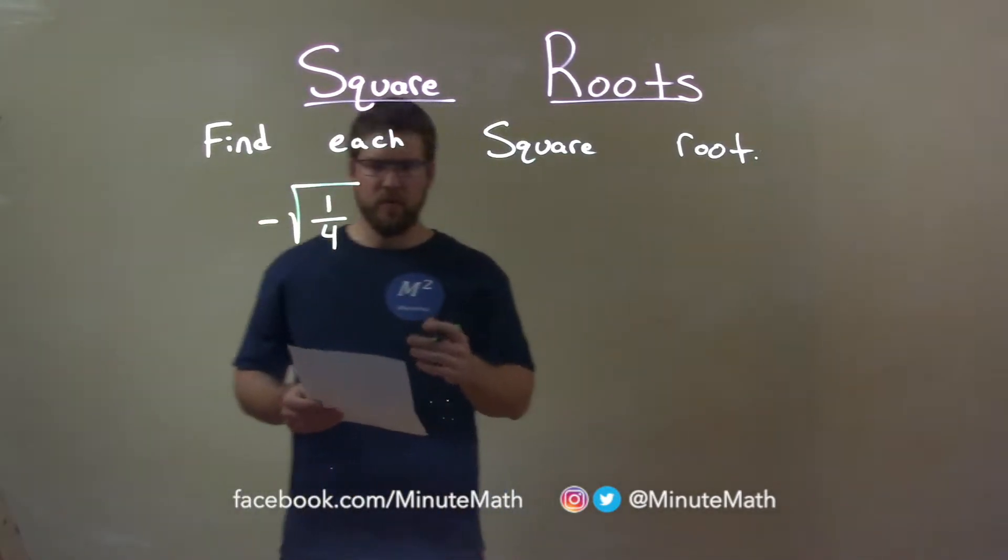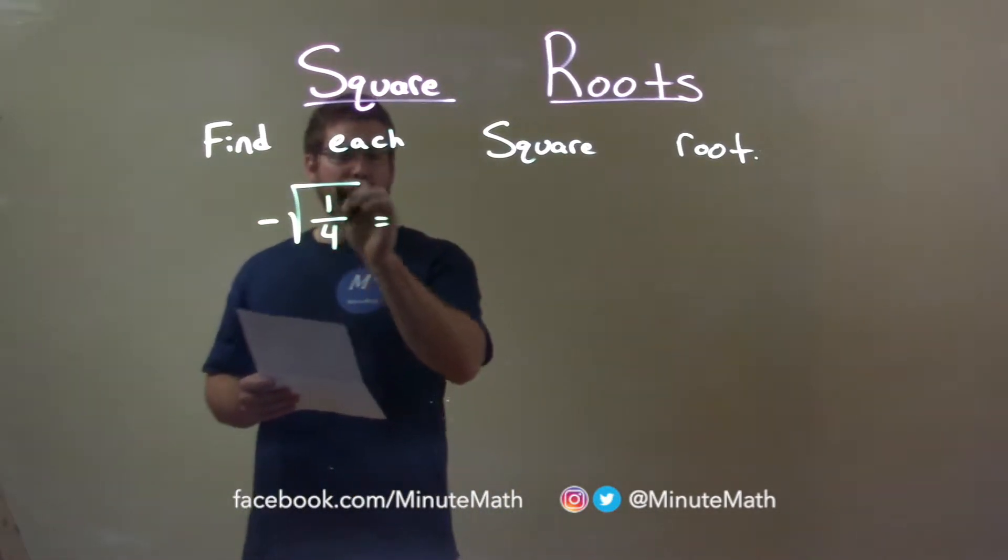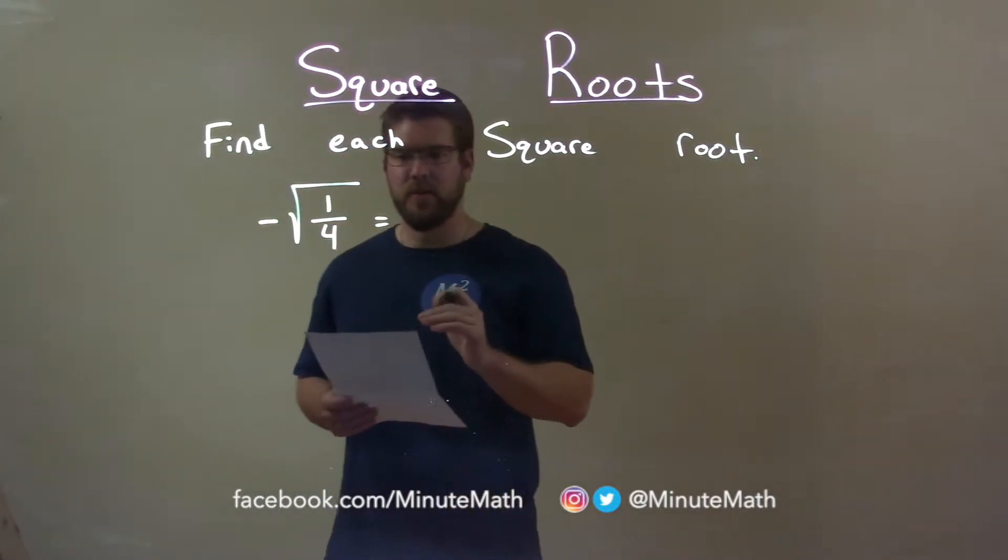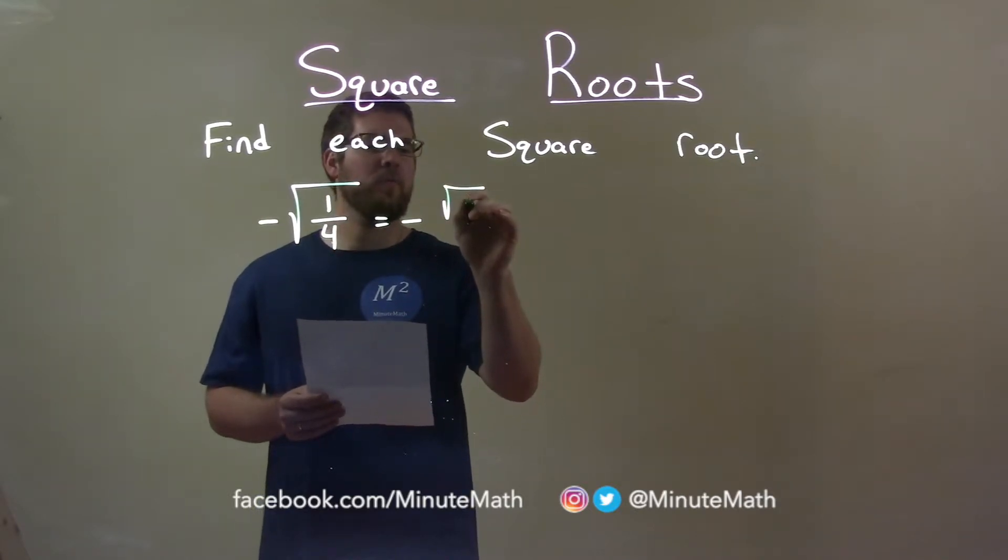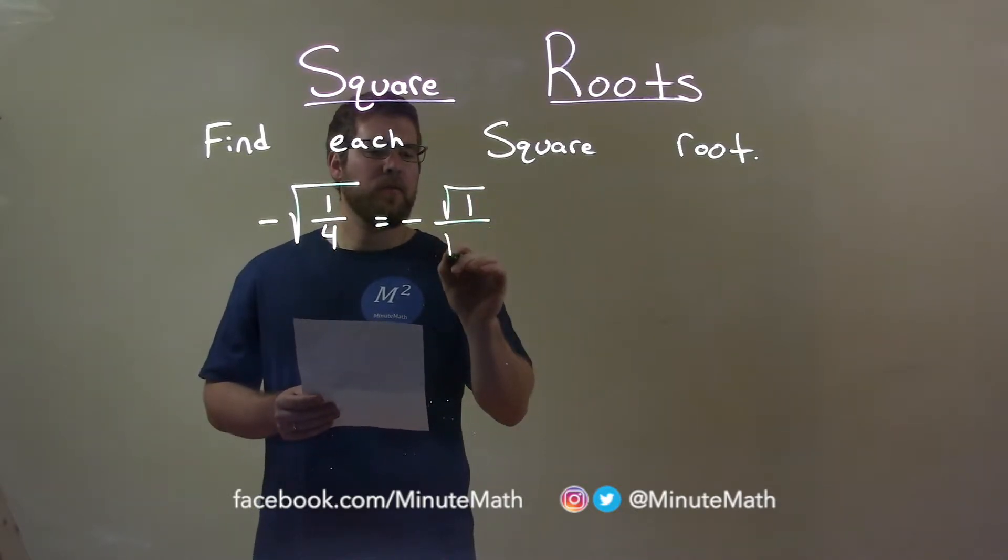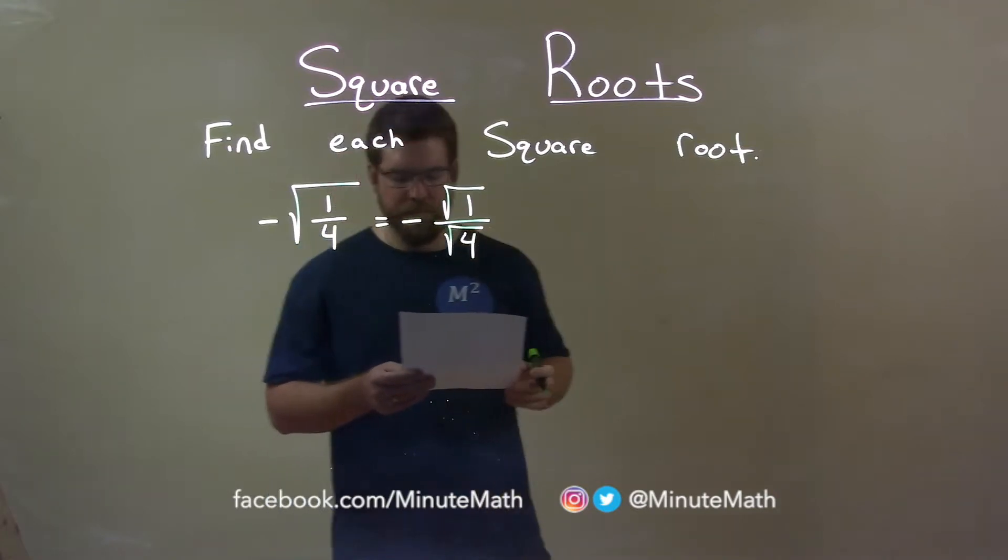As we work through this, we know that the square root of a fraction—we can take the root of the numerator and the denominator individually. The negative stays up front, and this is the same as the square root of one over the square root of four.